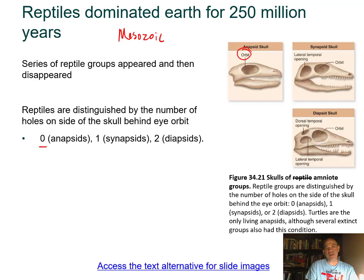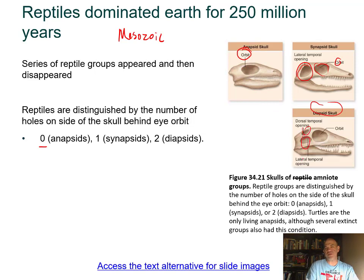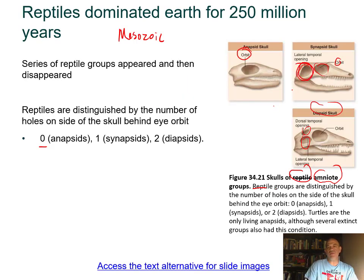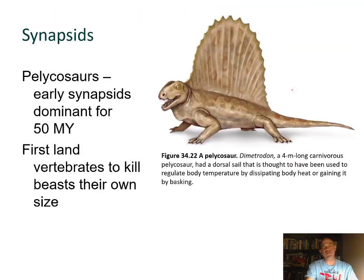Synapsids have one extra hole in the skull besides the orbit. Diapsids have two openings. The turtles and tortoises have the orbit but no extra opening, representing anapsids. The synapsids are significant: the anapsids are represented today only by the order Chelonia, while other anapsid groups went extinct. One of the first groups of synapsids were the pelicosaurs, which dominated for about 50 million years, were the first vertebrates to be really large with effective teeth, reaching up to four meters—over 12 feet—in length.